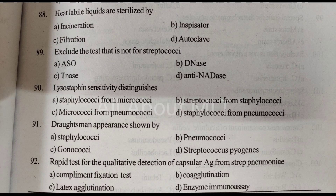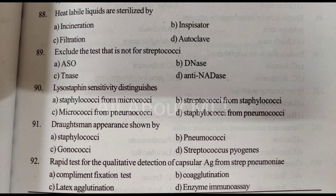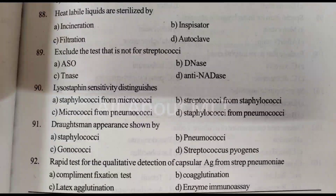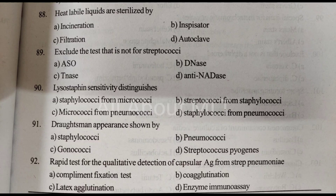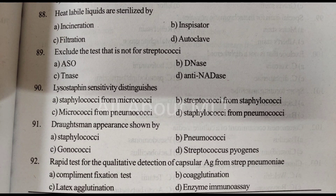Rapid test for the qualitative detection of capsular antigen from Streptococcus pneumoniae. Option A: Complement fixation test. Option B: Co-agglutination. Option C: Latex agglutination. Option D: Enzyme immunoassay. Answer is Option C: Latex agglutination.